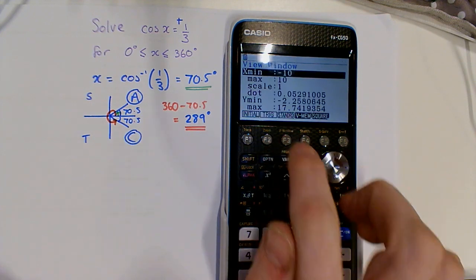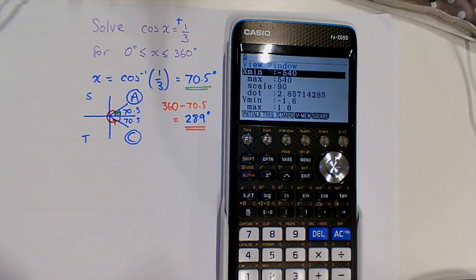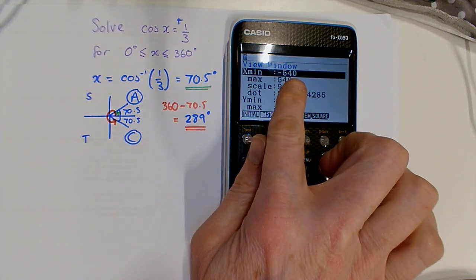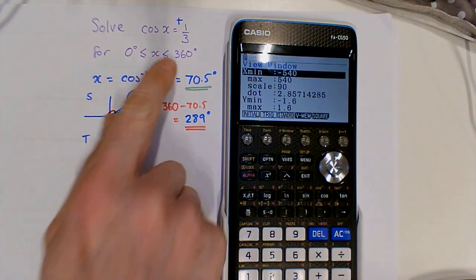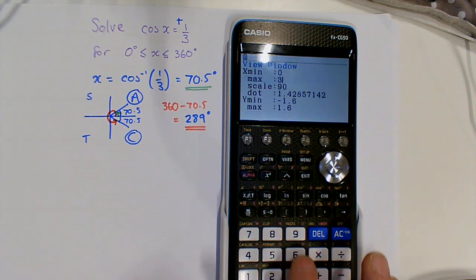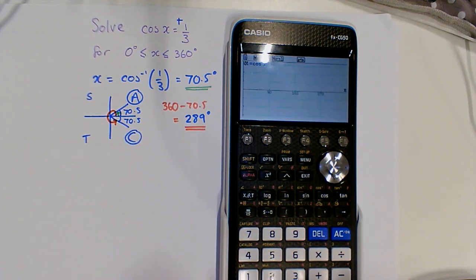I need to press view window and choose trig. I'm going to change my x values to the ones I need: 0 to 360, and draw again.